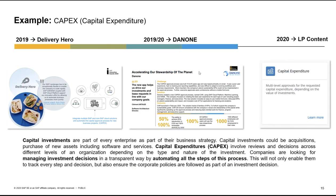Let us look at some customer use cases. DeliverHero, one of our SAP Innovation Award winners in 2019, is an S/4HANA customer following SAP's strategy of keeping the core clean and building extensions in Cloud Platform. Being a volume business operating in 50-plus countries, managing millions of orders per day with 300,000-plus restaurants onboarded, it's critical for them to have a consistent digital experience and transparency on operations. DeliverHero decided to use Cloud Platform as their innovation platform, and they built a capital expenditure approval use case.